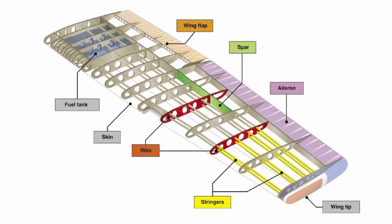The principal structural parts of the wing are spars, ribs, and stringers. These are reinforced by trusses, I-beams, tubing, or other devices, including the skin of the wing. The wing ribs determine the shape and thickness of the wing. In most modern airplanes, the fuel tanks are either an integral part of the wing structure or consist of flexible containers mounted inside of the wing.